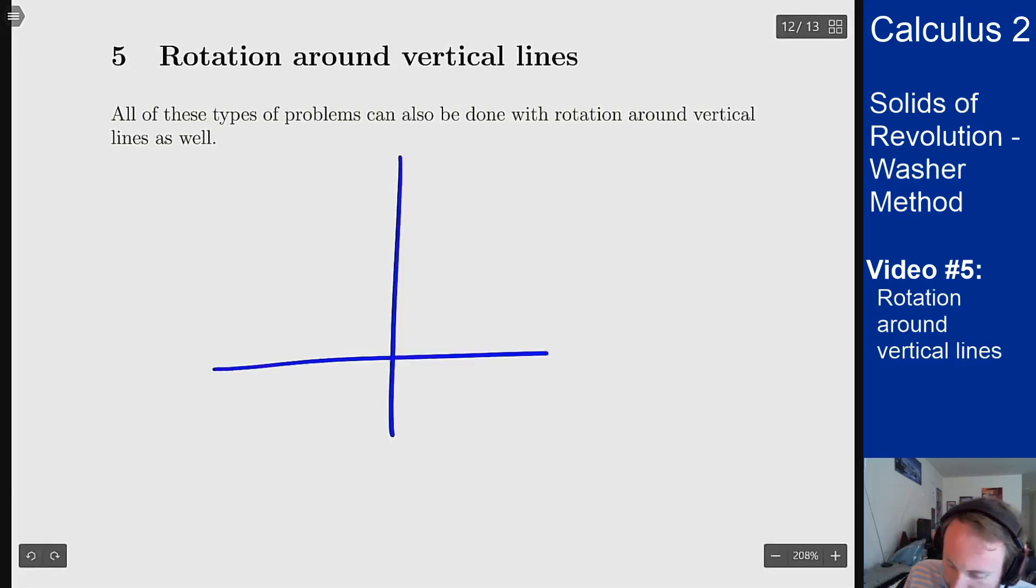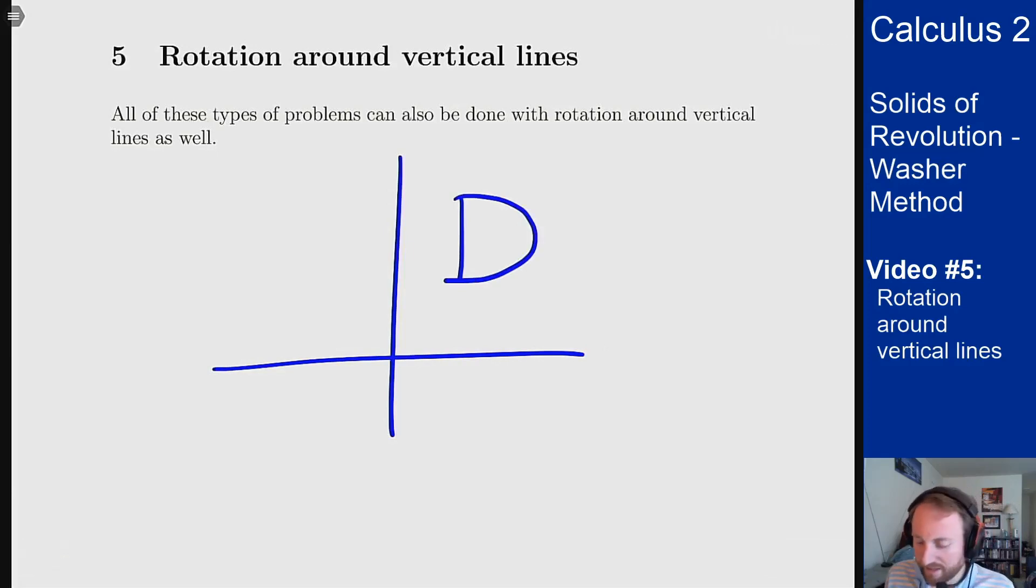So if we have a setup like a region like this that I want to rotate around a vertical line over here, what has to happen? Well the point of how we got washers was the segment we took was perpendicular to the axis of rotation.